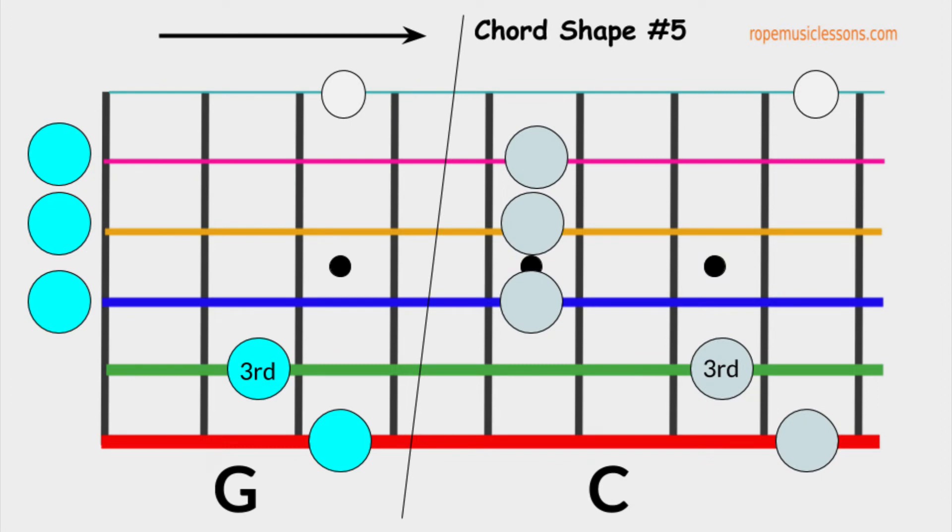This is chord shape number five. It's kind of similar to our chord shape number one. For this shape, I did not indicate the other third note, since it is indicated on our chord shape number one. Also, I would like for you to get familiar with the third of these chords, how it is positioned.